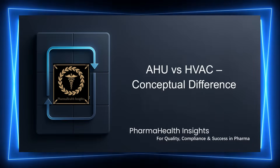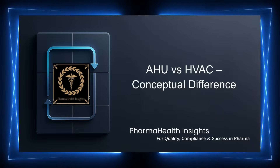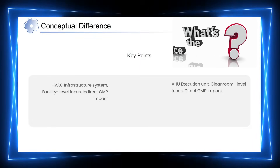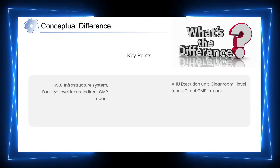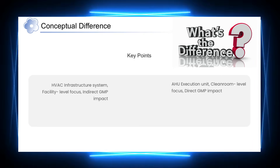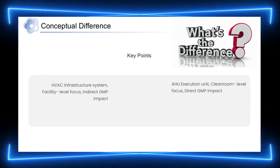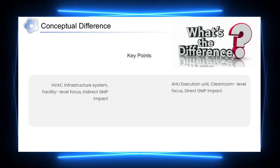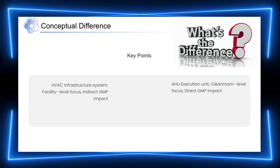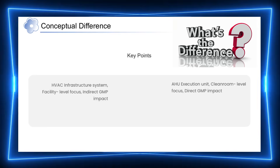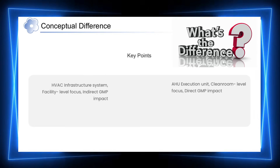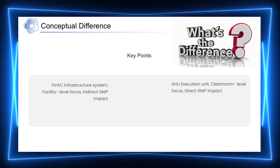Now that we understand both systems individually, let's clearly differentiate them. The key difference between HVAC and AHU lies in their roles within the facility. HVAC operates at a facility level, providing the overall infrastructure that supports environmental control across the building. AHUs, on the other hand, function at the clean room and process area level, where actual control of air quality and pressure takes place. Because AHUs directly influence the manufacturing environment, they have a direct impact on GMP compliance, whereas HVAC plays a more supportive role. Understanding this distinction is essential for designing, operating, and auditing pharmaceutical facilities.